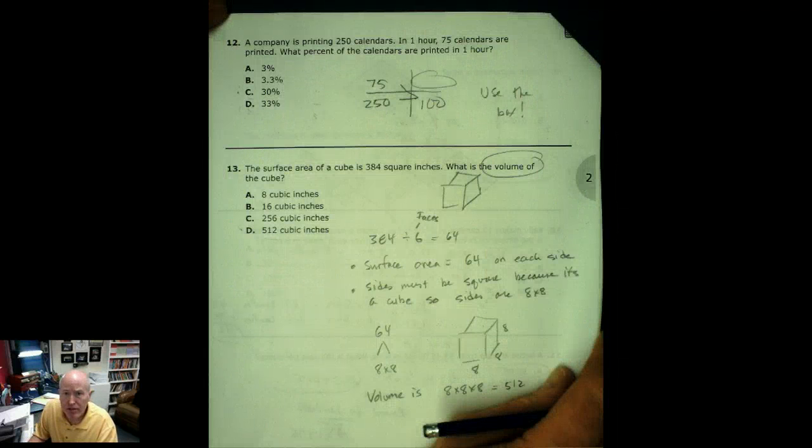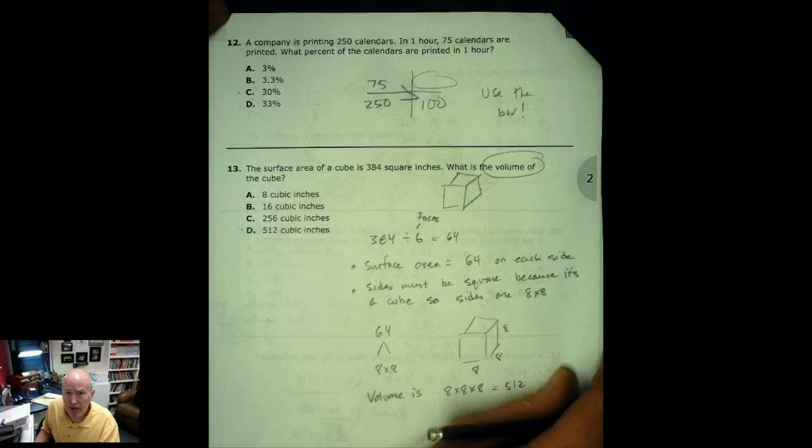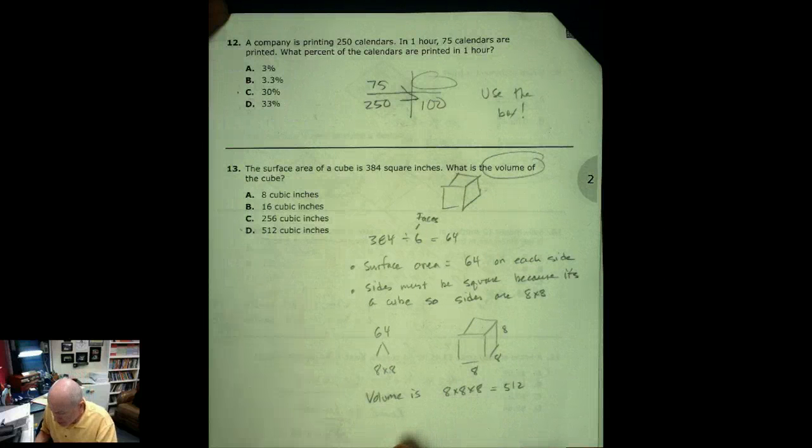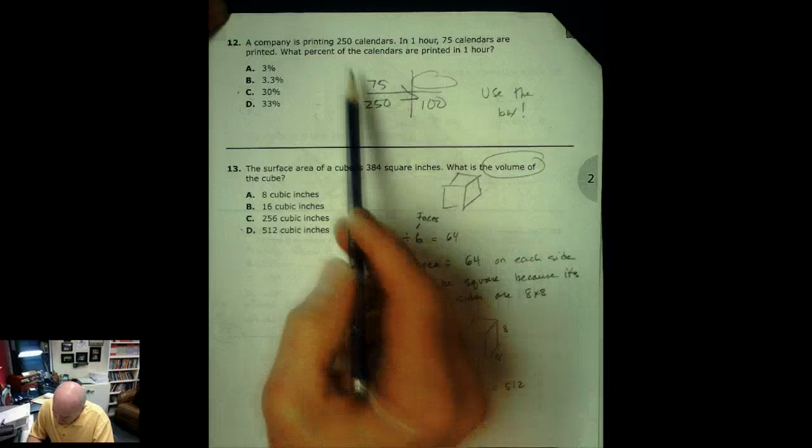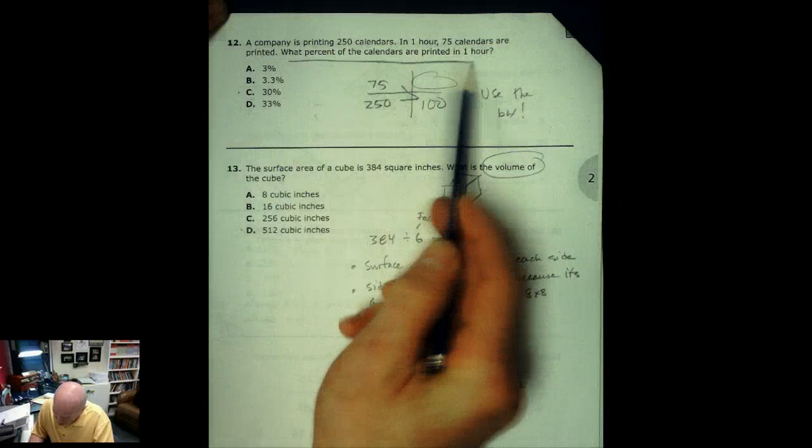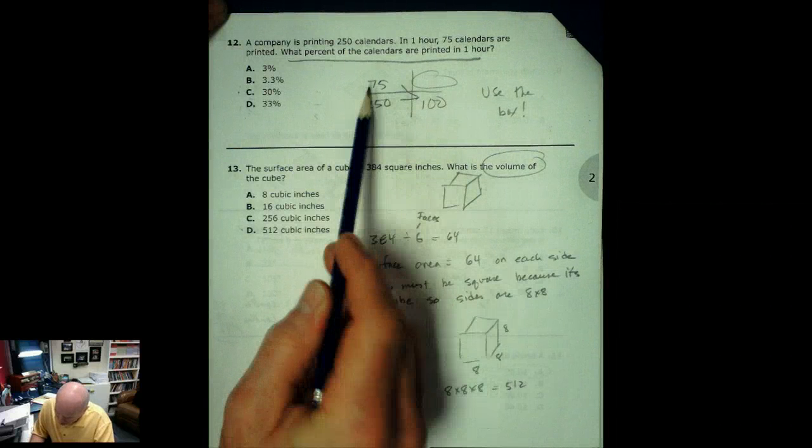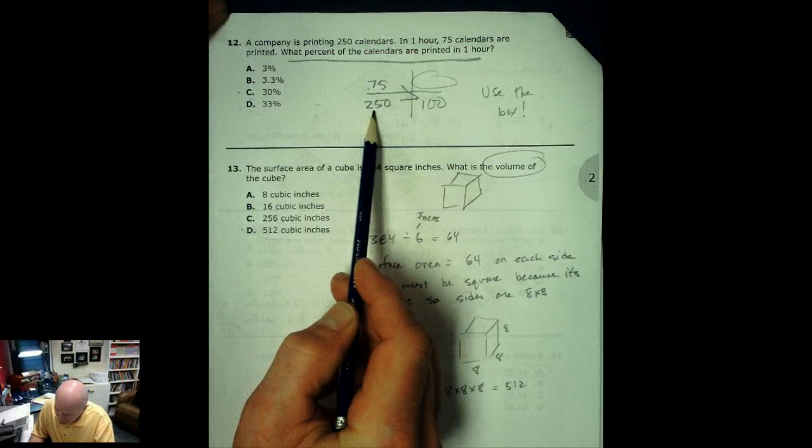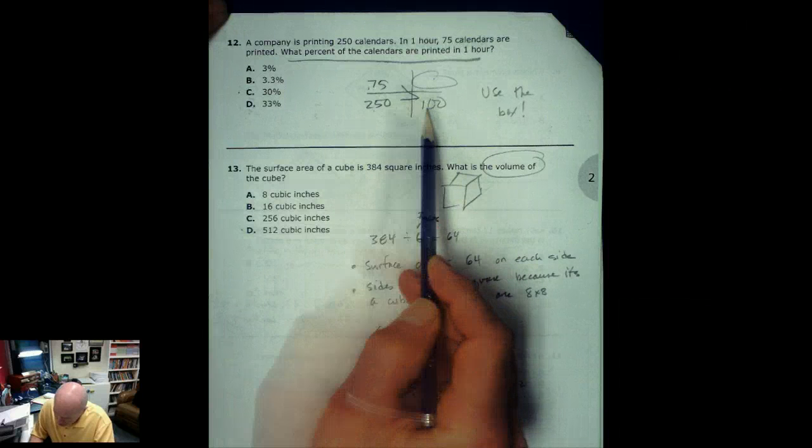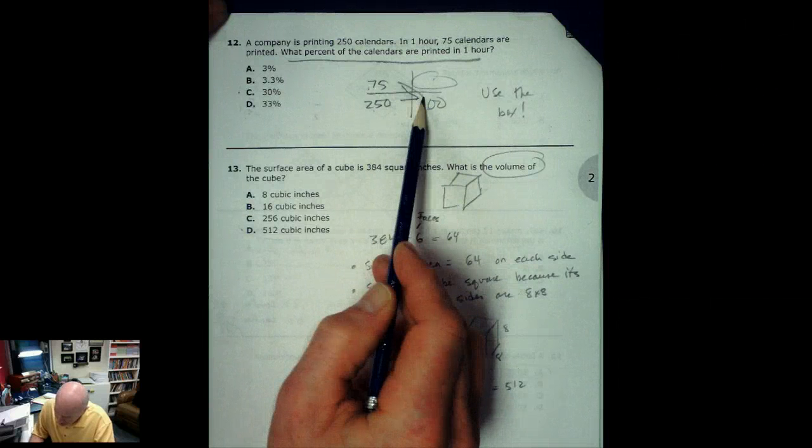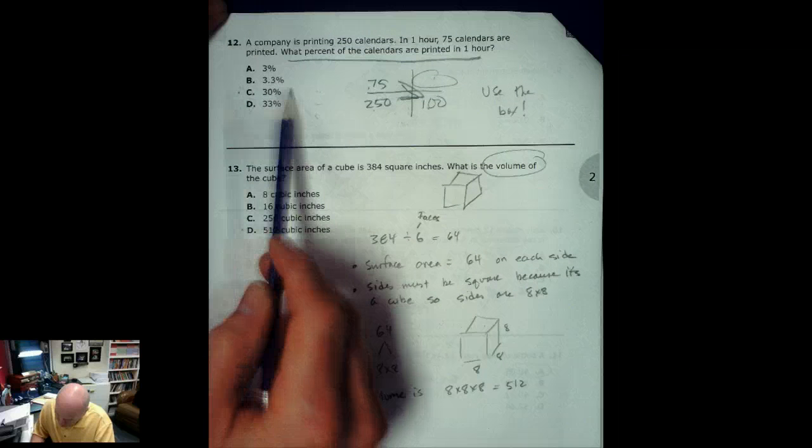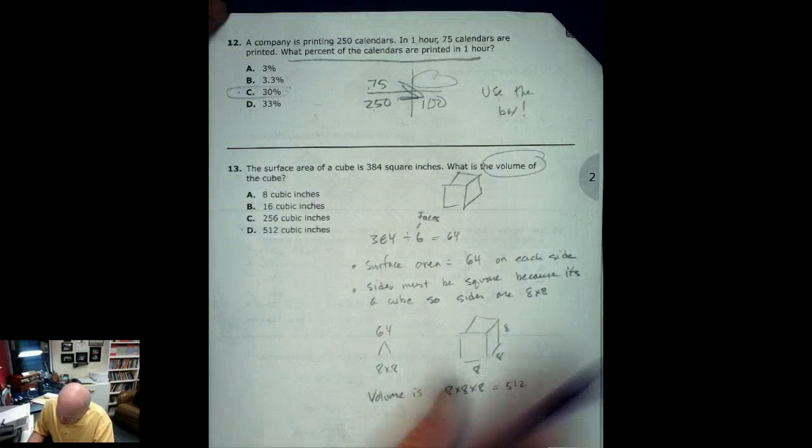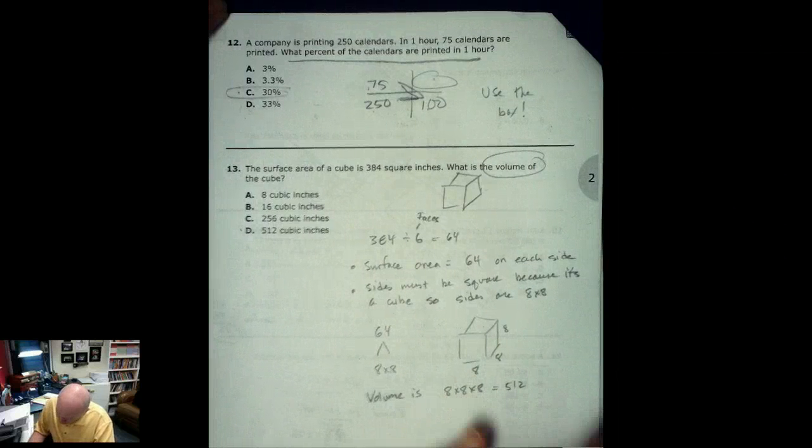This one here, a company printing 250 calendars. In one hour 75 calendars are made. I just use the box here because we're trying to find out what percent of the calendars are printed in one hour. So we know that 75 calendars out of 250 are printed. And we know that's going to be equivalent to some percentage out of 100. Multiply diagonally, divide the other two. 30%.